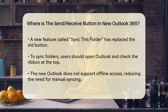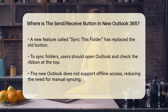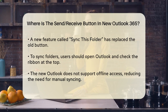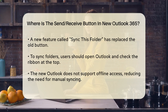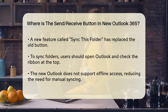Instead, Microsoft has introduced a new feature called Sync This Folder. To synchronize all your folders, including your inbox, sent items, and other folders, you need to follow these steps. Open Outlook and look for the ribbon at the top of the screen. However, you won't find a Send Receive tab as it used to be.